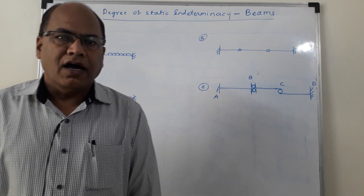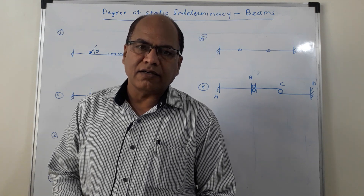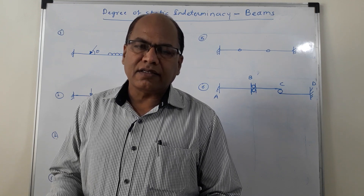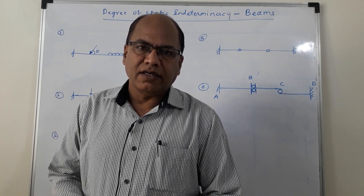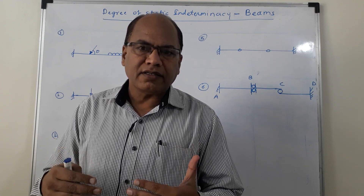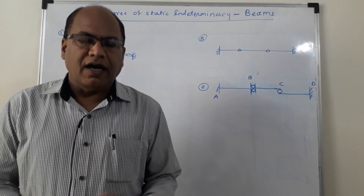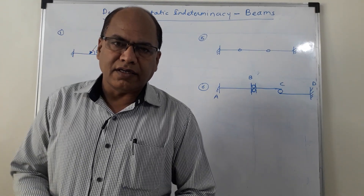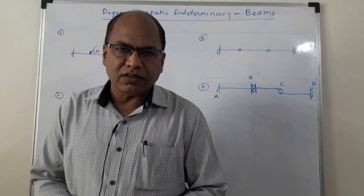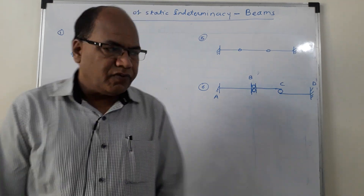Here I have shown a number of beams and I am going to get the degree of static indeterminacy for these beams. DSE (external degree of static indeterminacy) is equal to R minus 3 for plane or 2D structures. Beam is also a planar structure and as such DSE equals R minus 3, where R is the number of unknown reaction components and 3 is the number of equilibrium equations. But here we will have to make one adjustment.